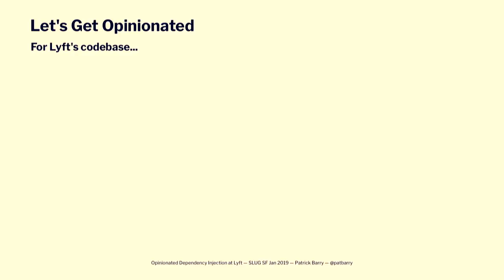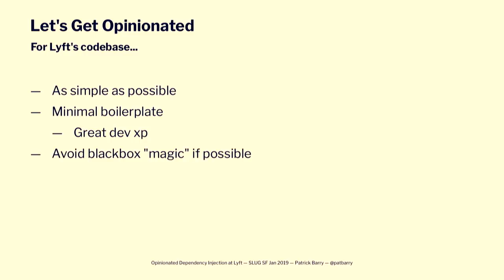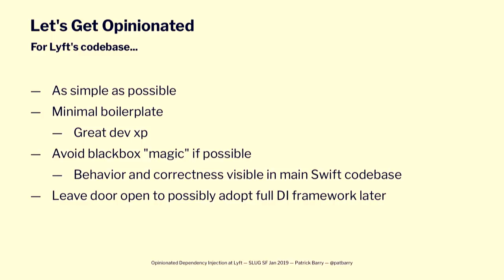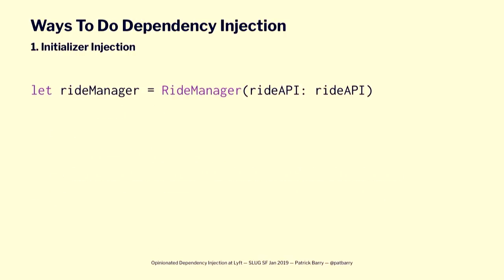Beyond the must-haves, there are also want-to-haves — our opinions about how we want to do things, and there's no right or wrong about this. We have a strong emphasis on keeping things as simple as possible. Minimal boilerplate is nice for developer experience. We wanted things where you could reason about them in the actual code base without black-box magic happening unbeknownst to you — all the behavior and correctness should be visible in the main Swift code itself. And just to hedge our bets, we wanted to leave the door open to possibly adopting a full DI framework later if we deemed it necessary.